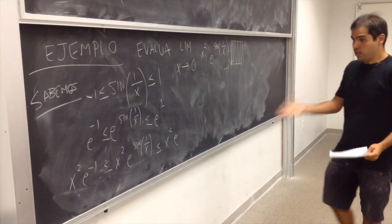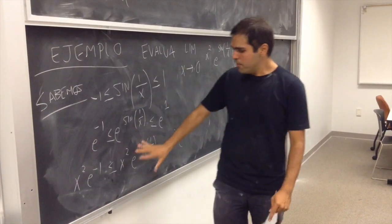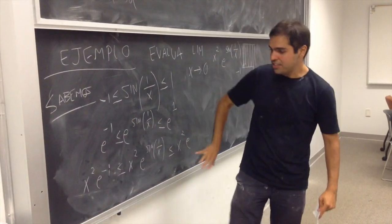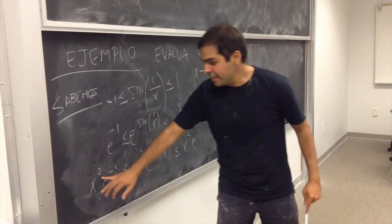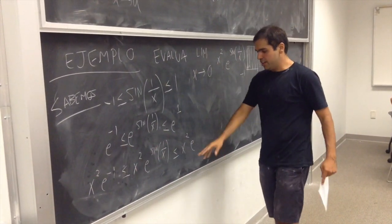es entre x cuadrado e a la seno de 1 por encima de x y x cuadrado e. Y lo dijo, esta función es muy complicada, pero sabemos que esta función es entre dos funciones más fáciles, que es x cuadrado e a la menos 1 y x cuadrado e.